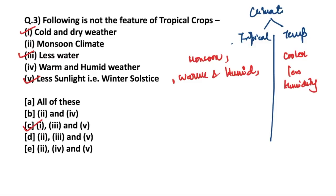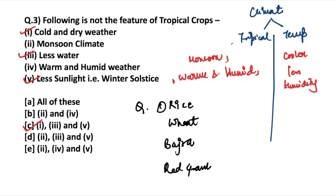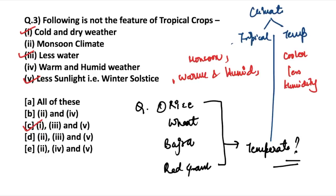The answer is options 1, 3, and 5 — these are not features of tropical crops but are instead features of temperate crops. Now, a question for you: among rice, wheat, bajra, and red gram, which of the following is the temperate crop? Answer in the comments below.